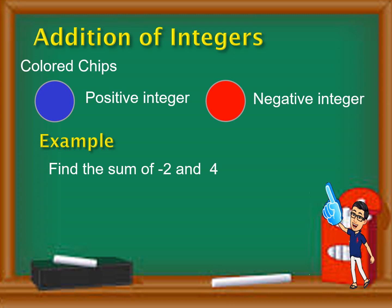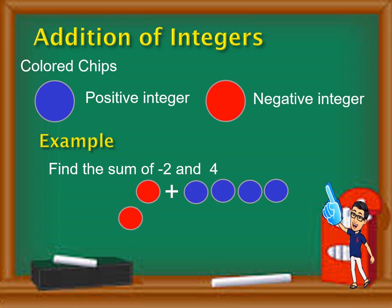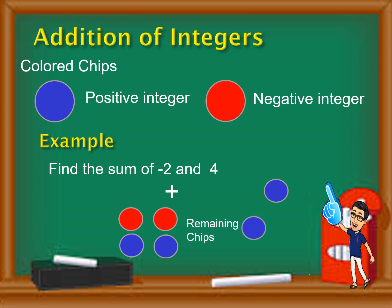Let's proceed with another example. Find the sum of negative two and four. Since two is negative, we need two red chips. Since four is positive, we need four blue chips. There will be two zero pairs: one red and blue, and another red and another blue. That means we have two zero pairs, so those are zero. The remaining chips are two blue chips, which is equivalent to positive two. Therefore, negative two plus four is equal to two.